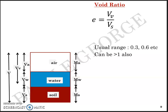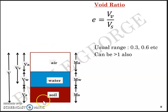Voids ratio can be greater than 1 because, for example, if the volume of voids is 2 units and the volume of solids is 1 unit, then e = Vv/Vs = 2. So Vv/Vs can indeed exceed 1. Higher the voids ratio, looser will be the packing; lower the voids ratio, denser will be the packing.